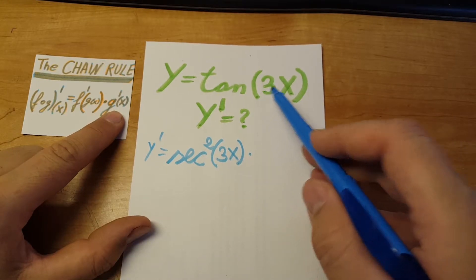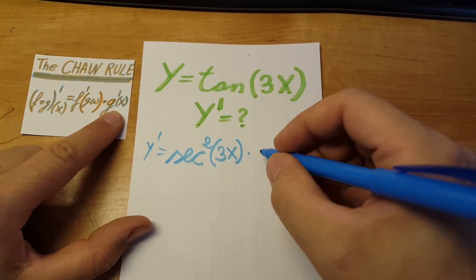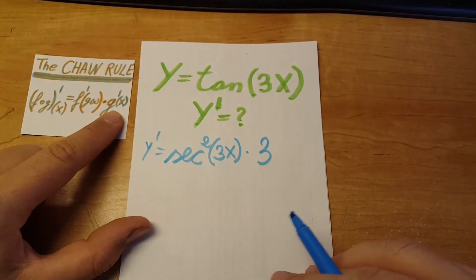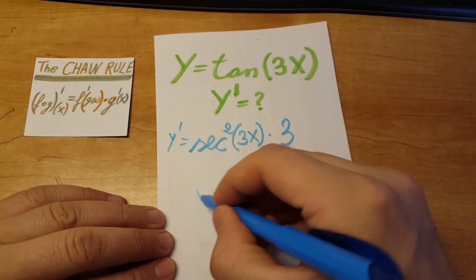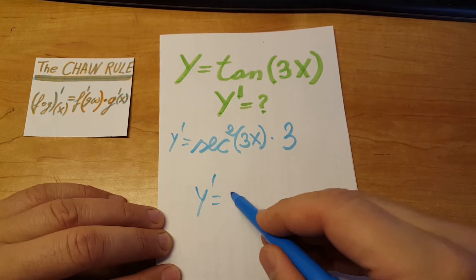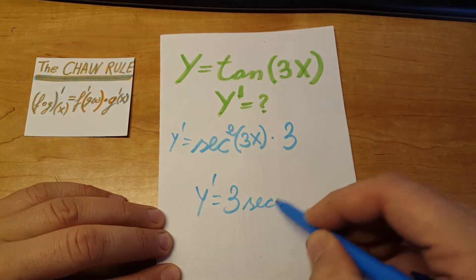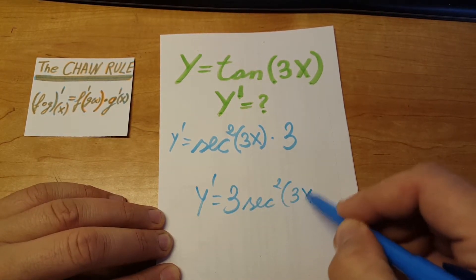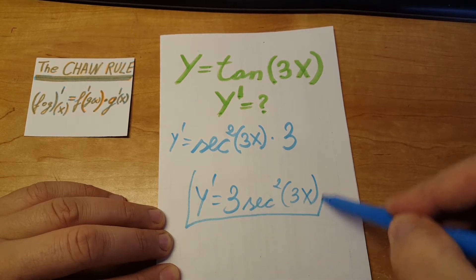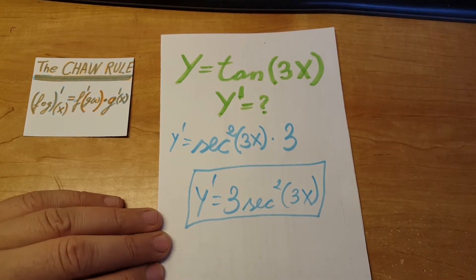So the derivative of 3x will be simply 3. Now let's just write it in a nicer form: 3 secant squared 3x. That would be it.